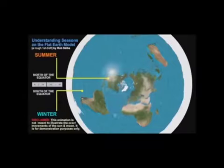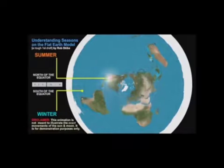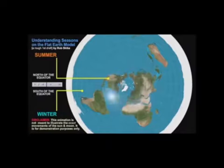Proof 50: If the Earth were truly a globe, the Arctic and Antarctic polar regions and areas of comparable latitude north and south of the equator should share similar conditions and characteristics, such as comparable temperatures, seasonal changes, length of daylight, plant and animal life. In reality, however, the Arctic and Antarctic regions and areas of comparable latitude north and south of the equator differ greatly in many ways entirely inconsistent with the Ball model and entirely consistent with the Flat model.